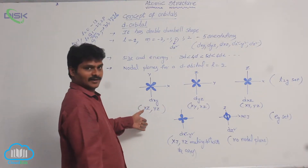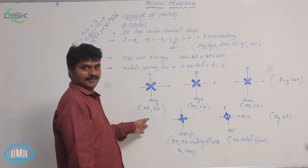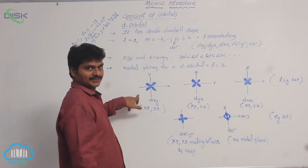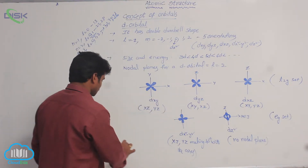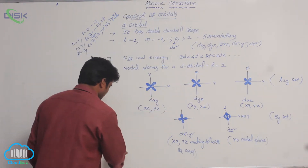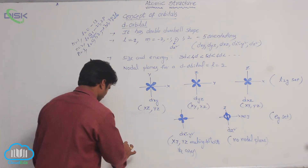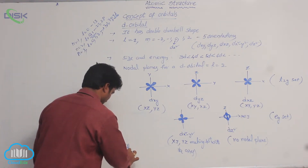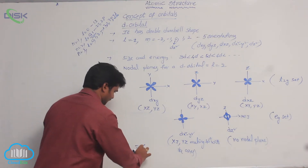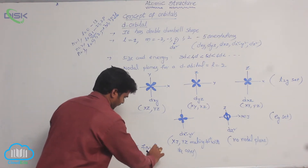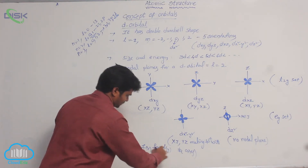These are the pictures for d-orbitals — 5 d-orbitals. See the last one, this d-orbital is functioning. If you take the dxy orbital, it is a function of distance r, function in the x direction, and function in the y direction.